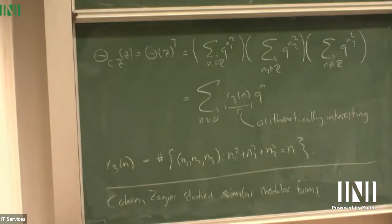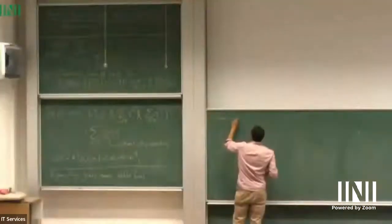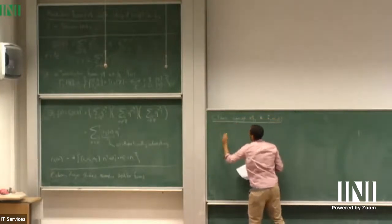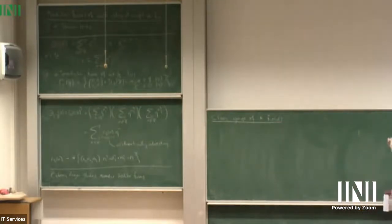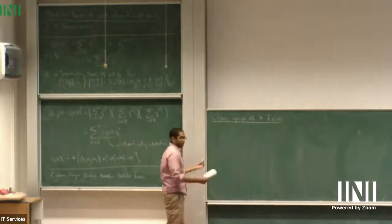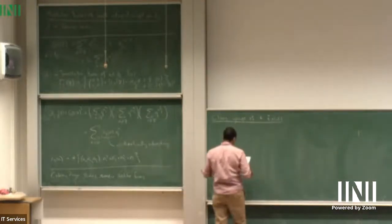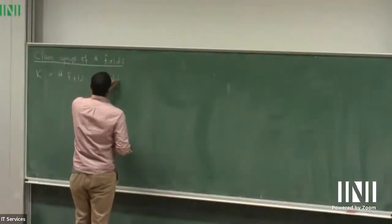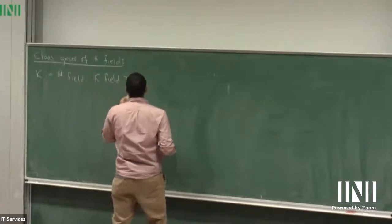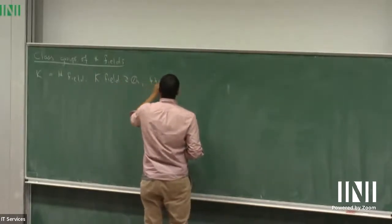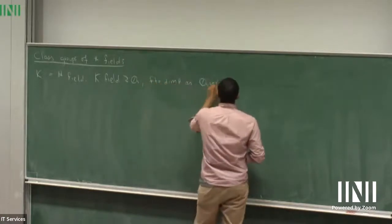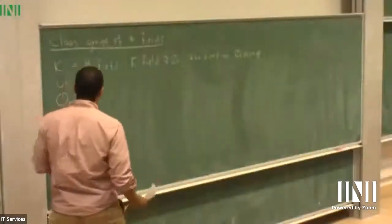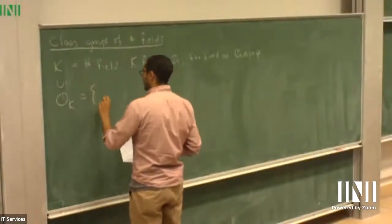I want to take a brief diversion into what are called class groups of number fields. Suppose K is a number field, meaning K is a field containing the rational numbers that is finite dimensional as a Q vector space. Inside of K, you can construct what's called the ring of integers, commonly denoted O_K. This is a certain lattice inside K, the analog of the integers inside Q.